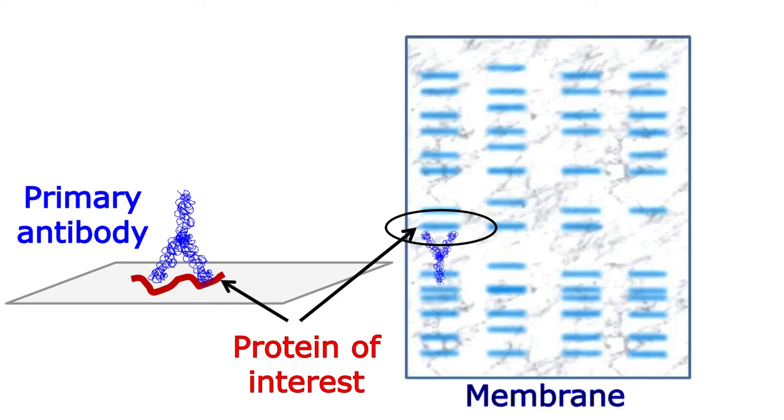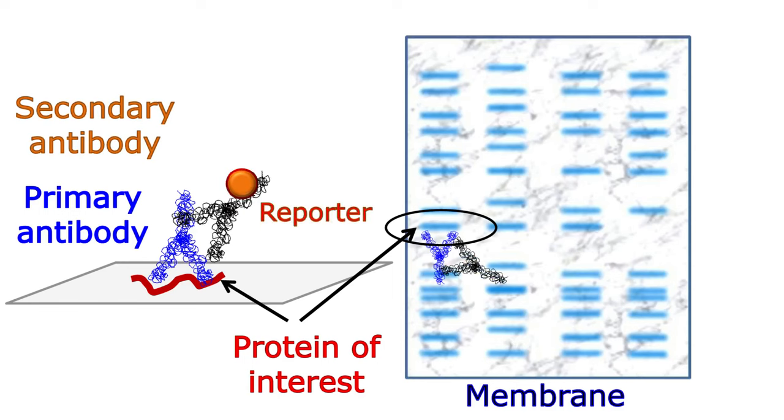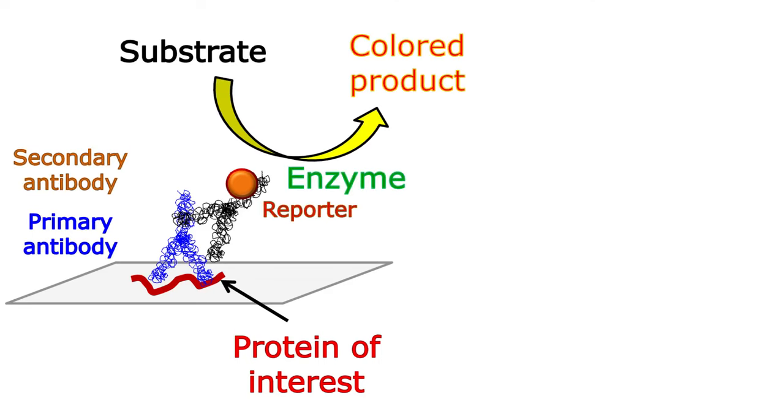In order to detect binding of the primary antibody, we use a secondary antibody. This secondary antibody is attached to a reporter enzyme that converts a substrate into a colored product which can easily be detected.